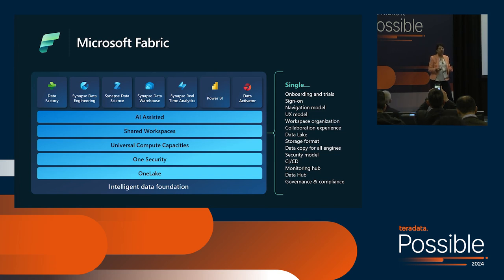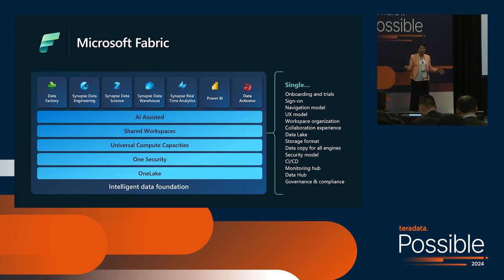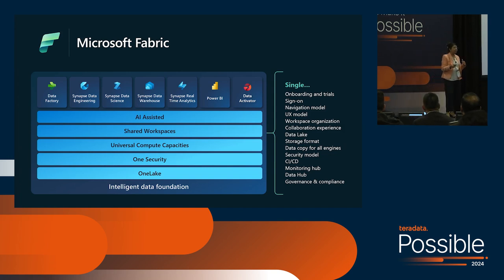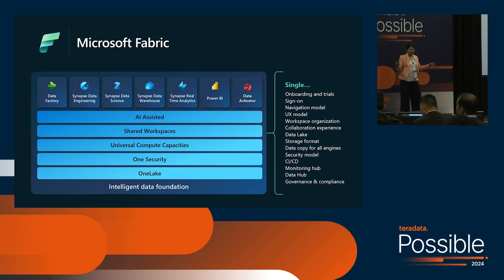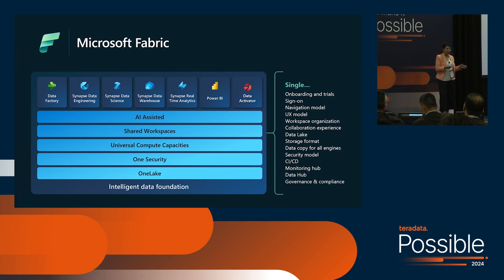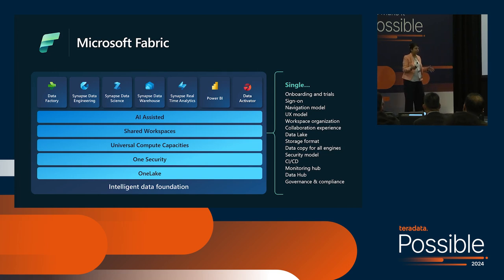We also have the concept of workspaces and universal compute. We have full Git integration, so you have continuous integration and continuous delivery incorporated into this. And most importantly, as we dive into the world and era of AI, being able to ensure compliance on what data you're using — is the data anonymized? Do I have good lineage and tracking? All of that is governed through Purview, which comes right out of the box on Microsoft Fabric.